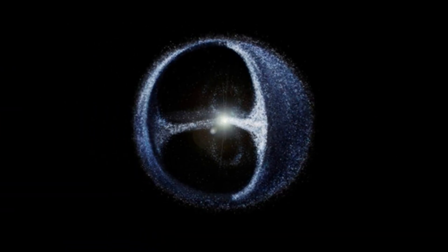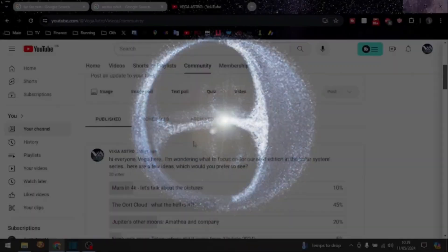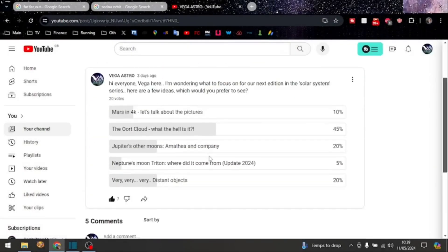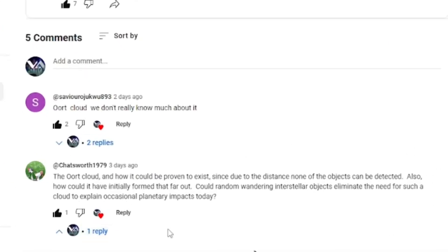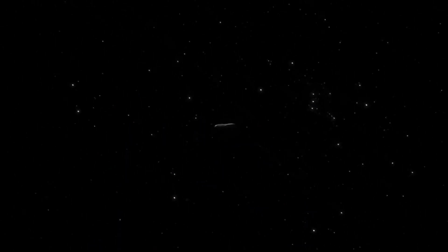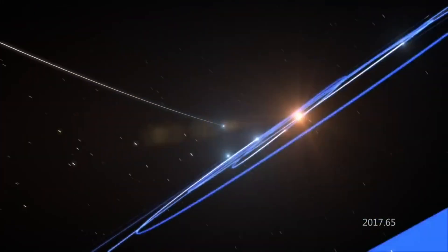So given that none of these particular objects are even 200 astronomical units, let alone the 2000 where the Oort cloud is thought to begin, how could it even be proven to exist? As one of our channel's great friends, Chatsworth1979, brought to my attention: How could the Oort cloud have initially formed that far out? Or is it possible that random wandering interstellar objects eliminate the need for such a cloud to explain occasional planetary impacts today?